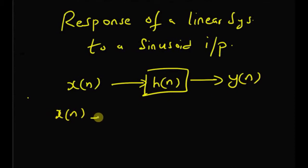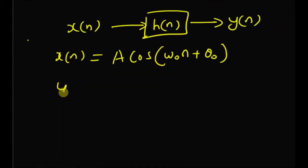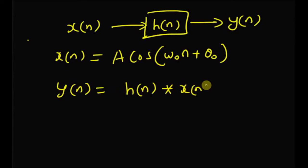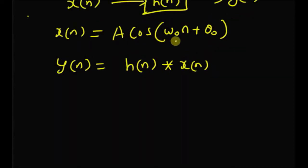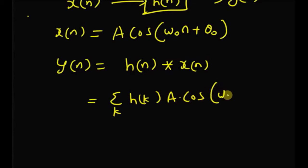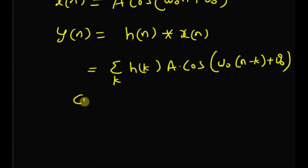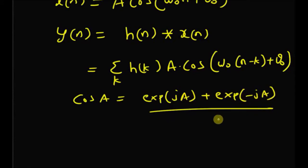Here x of n is a sinusoid — it has the following structure: a times cosine of omega naught n plus the initial phase theta naught. By definition, the output of a linear system y of n can be defined as the convolution between h of n and x of n. Using x of n as a sinusoid, the convolution becomes a summation over k of h of k multiplied by a times cosine of omega naught multiplied by n minus k plus theta naught. We then use the definition of cosine as exponential of j times a plus exponential of minus j times a, all over 2.